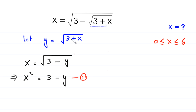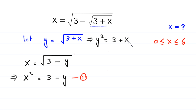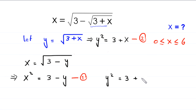From the substitution y equals the square root of 3 plus x, squaring both sides gives y squared equals 3 plus x — call this equation 2. We copy equation 2: y squared equals 3 plus x.